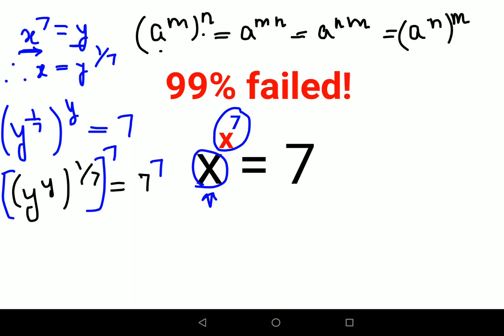So from here what I can say is y raised to y. See this 1 upon 7 will get multiplied by 7. So this and this will cancel. Is equals to 7 raised to 7. So from here I can deduce your y is nothing but 7.